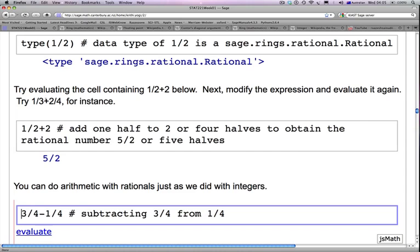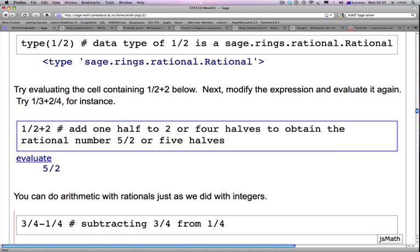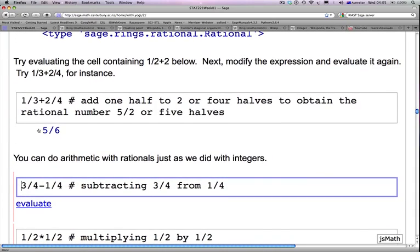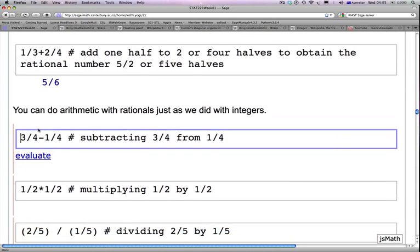You can modify the expression and evaluate it again. Let's try 1 over 3 plus 2 over 4. Hit SHIFT, RETURN. You get 5 over 6. So that's how you can do rational addition in SAGE.